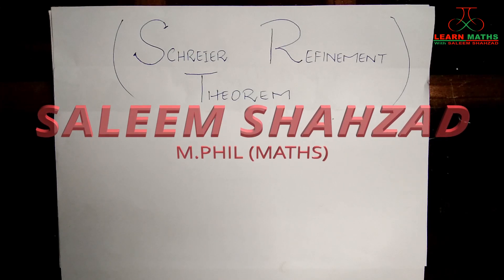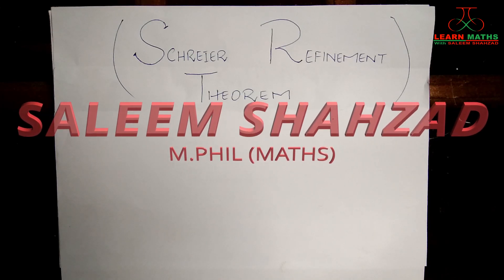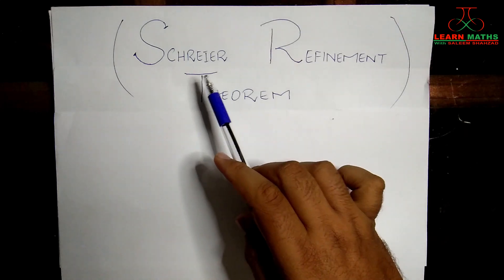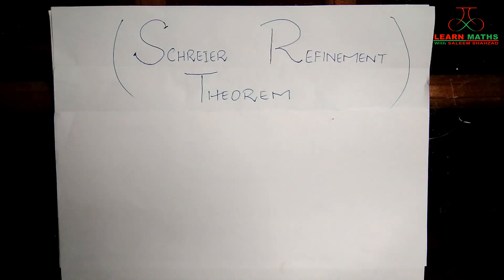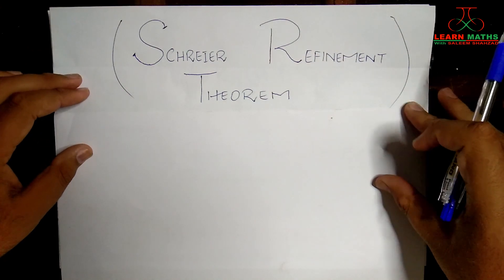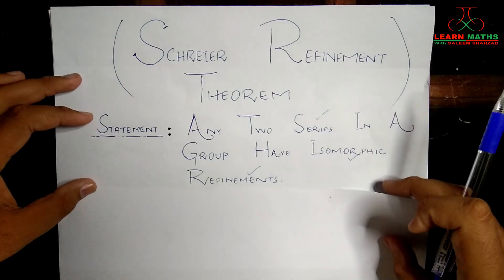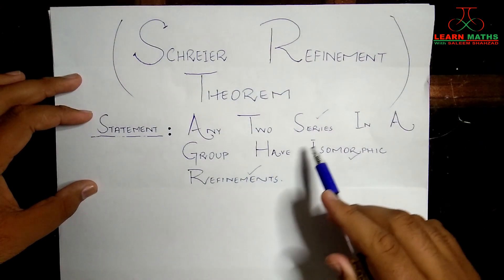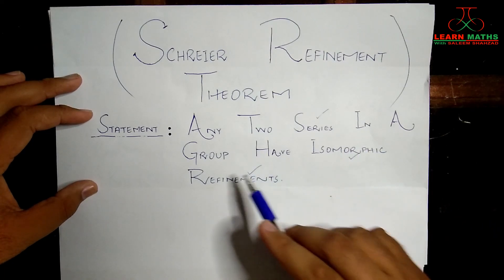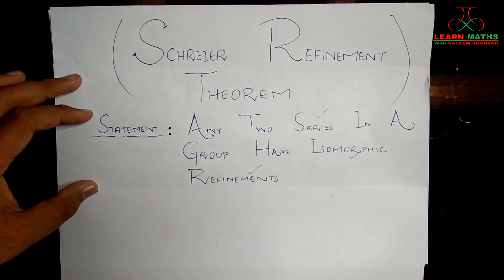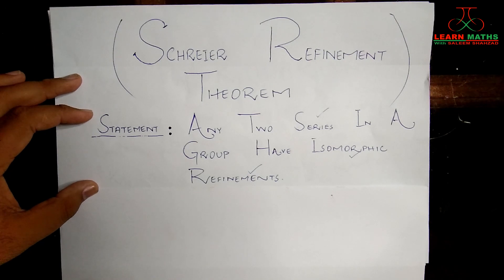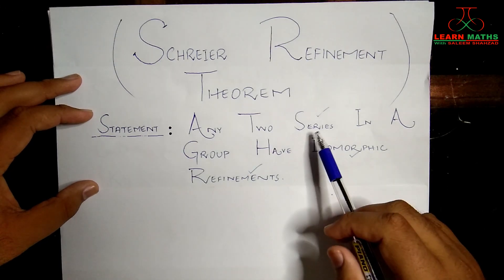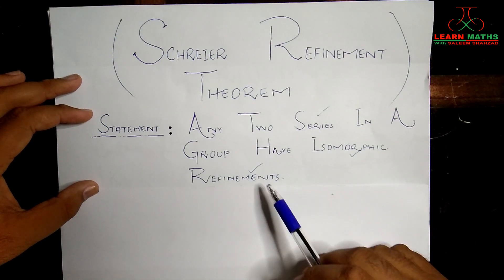Assalamu alaikum dear students, welcome back to my channel. In today's lecture we are going to prove the famous Schreier Refinement Theorem. This theorem is a direct application of the famous Butterfly Lemma, also called the Zassenhaus Lemma. It states that any two series in a group have isomorphic refinements. There are three keywords in this statement: series, isomorphic, and refinements.